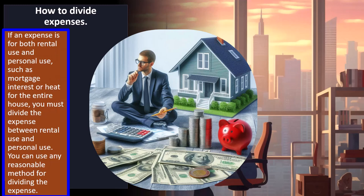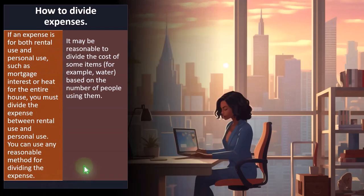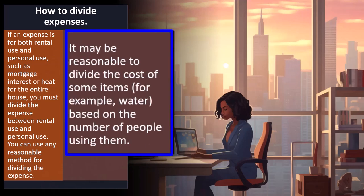How do you divide expenses? If an expense is for both rental use and personal use — such as mortgage interest or heat for the entire house — you must divide the expense between rental and personal use. You can use any reasonable method for dividing the expenses, and you need a rational method that you can justify in the event of an audit. For example, it may be reasonable to divide the cost of some items, like water, based on the number of people — a kind of activity-based allocation.